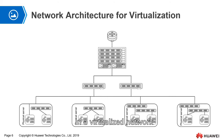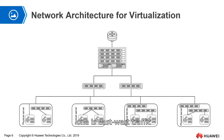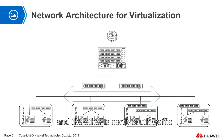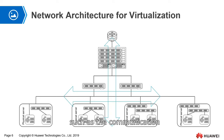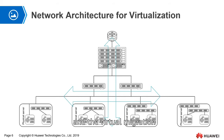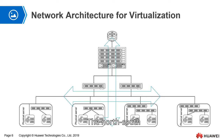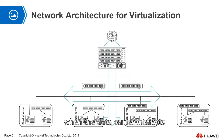In a virtualized network, we divide all traffic into two types. One is east-west traffic, and another is north-south traffic. East-west traffic refers to communication within the data center, such as communication between virtual machines and virtual machine migration. North-south traffic is mainly generated when the data center interacts with the outside of the data center.